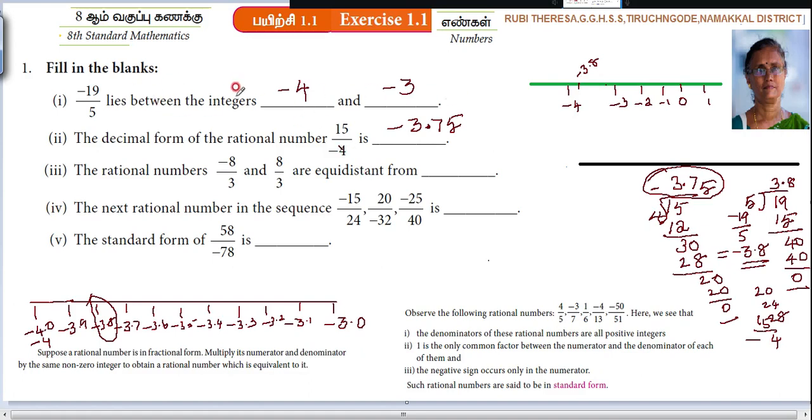So those who are attending competitive exam, you should not do like this also. Just by saying the table, you can do it. That is minus 3.8, it is nearer to minus 4. So it lies between minus 4 and minus 3. Next one, the rational numbers minus 8 by 3 and 8 by 3 are equidistanced from.